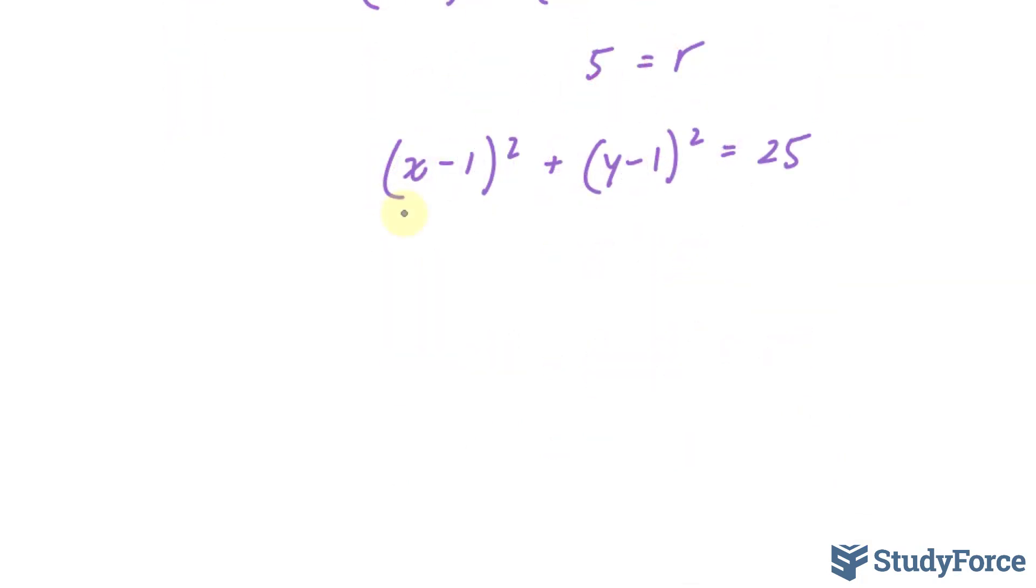(x - 1)² is the same thing as x² - 2x + 1. So I've expanded this and it has become this expression. Similarly, I'll do the same thing for this. If I expand this, I should end up with y² - 2y + 1. And I'll bring this over like I did before in the other question.